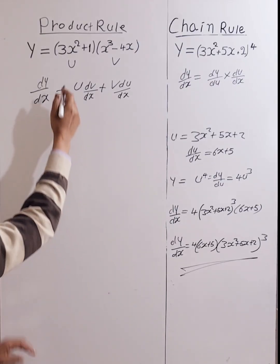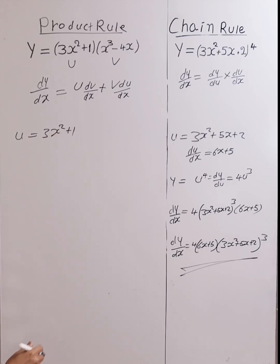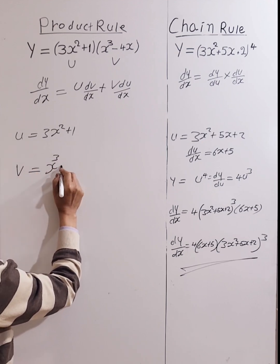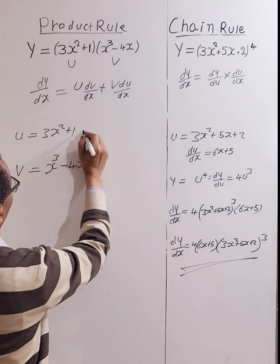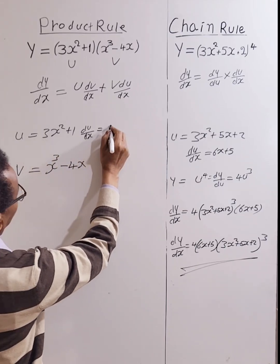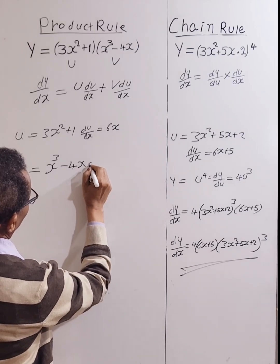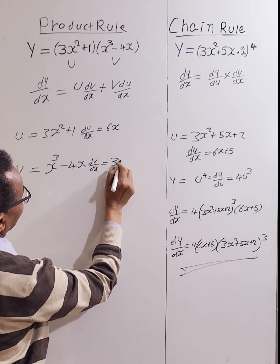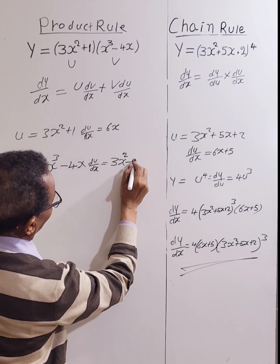Let's say u equals 3x² + 1 and v equals x³ − 4x. Let's get the derivative of each function. So du/dx equals 6x. Then dv/dx equals 3x² − 4.